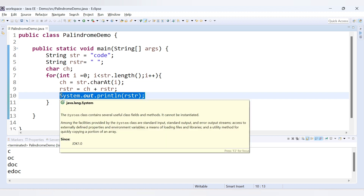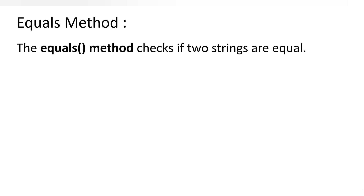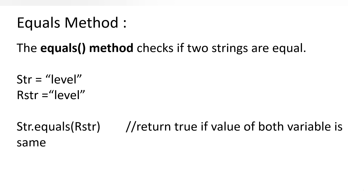We have the reverse string, but we don't just want to print it — we need to check for a palindrome. If the reverse string equals the original string, it is a palindrome. To compare two strings in Java we use the `.equals()` method: `str.equals(rstr)`. This method returns a boolean — true if both strings are the same, false if they are not.